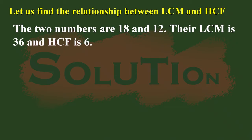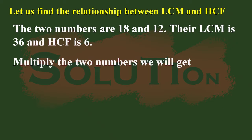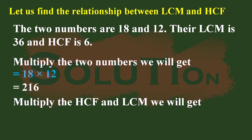Now we have two numbers, 18 and 12. Their LCM is 36 and their HCF is 6. If we multiply 18 and 12 we get 216, and if we multiply the HCF and LCM — 6 and 36 — we also get 216.